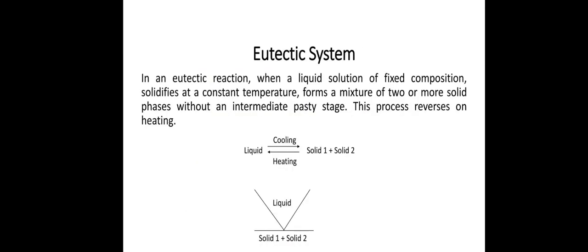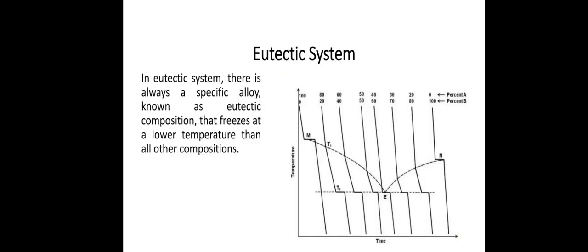Eutectic system. In a eutectic reaction, when a liquid solution of fixed composition solidifies at a constant temperature, it forms a mixture of two or more solid phases without an intermediate phase T stage. This process reverses on heating. Liquid when we are heating, two solid regions we get. When we are cooling it, we get the same in reverse. In this eutectic system, there is always a specific alloy known as eutectic composition that freezes at lower temperature than all other compositions.